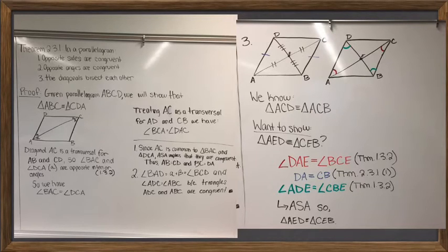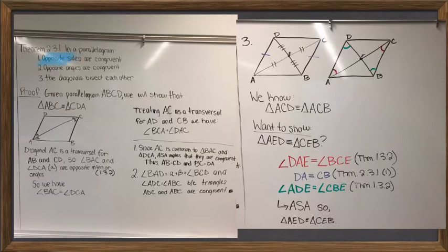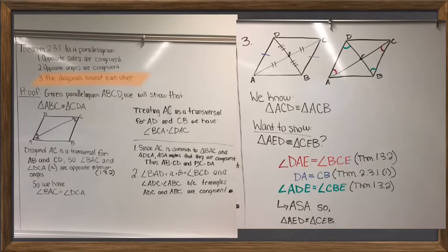We started with a proof of Theorem 2.3.1, which is a theorem about parallelograms that we end up using more than once in the results that follow. It has three components: first, that the opposite sides of a parallelogram are congruent; second, the opposite angles are congruent; and finally — the most surprising — that the diagonals of a parallelogram bisect one another.